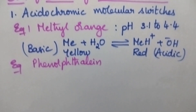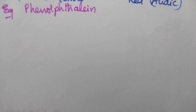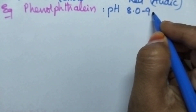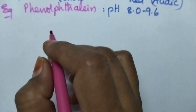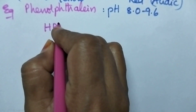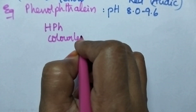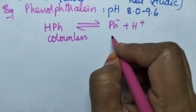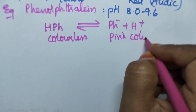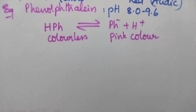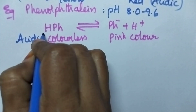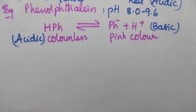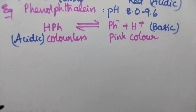In a similar way, when we consider phenolphthalein, it also modifies its structure when the pH is in the range of 8 to 9.6. Phenolphthalein is colorless in acidic medium and it appears in pink color in basic medium. Hence, both methyl orange and phenolphthalein are good examples of acidochromic molecular switches.